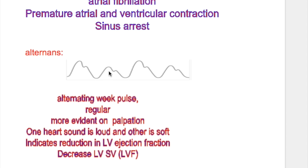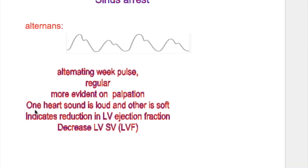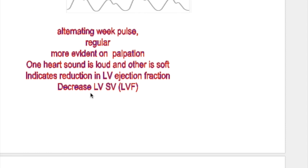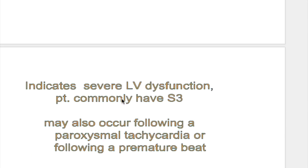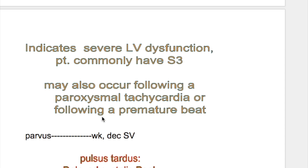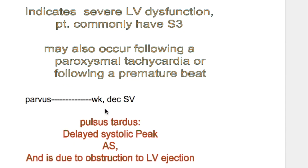In pulsus alternans there are alternating weak and strong pulses. The rhythm is regular in pulsus alternans. On auscultation while taking blood pressure, one sound is loud and the other is soft. Pulsus alternans indicates a reduction in left ventricular ejection fraction and a decrease in left ventricular stroke volume, as occurring in left ventricular failure. It indicates severe left ventricular dysfunction and patients commonly have a third heart sound. Pulsus alternans may also occur following a paroxysmal tachycardia or following a premature beat.